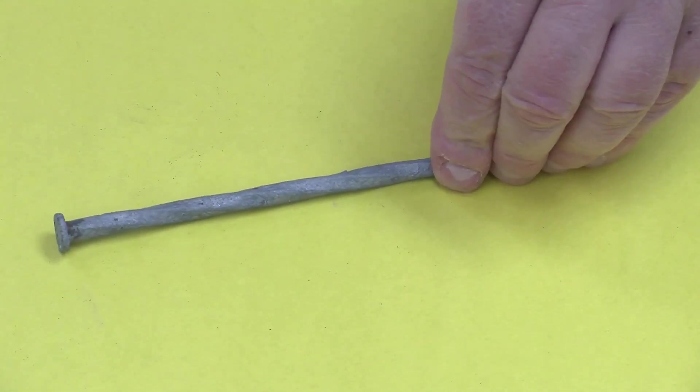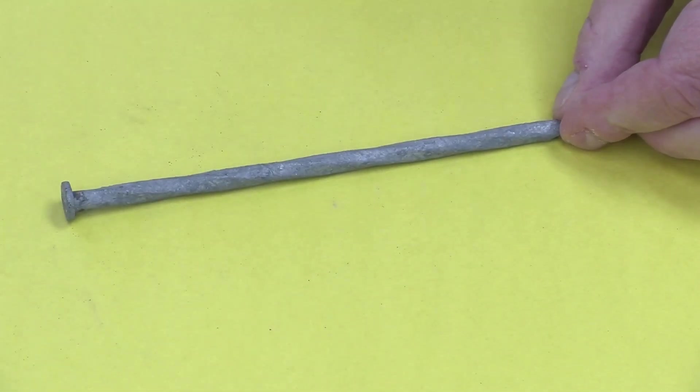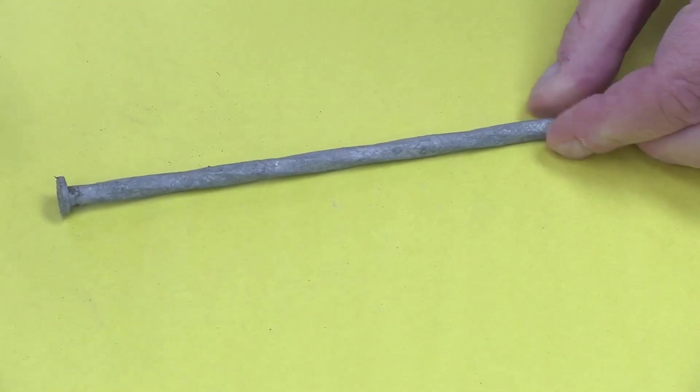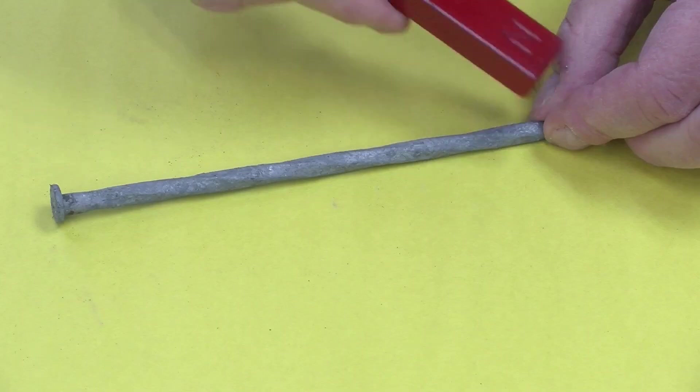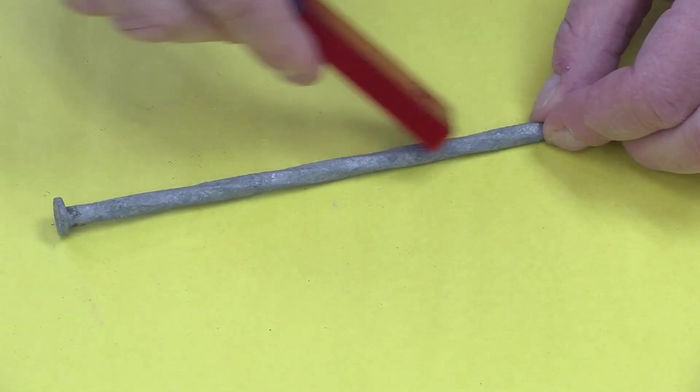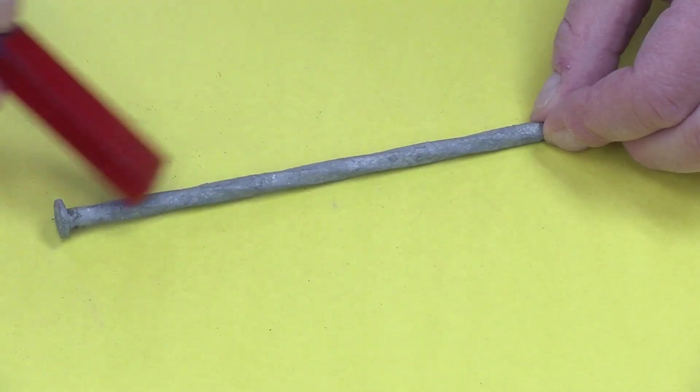So, how do we magnetize something? Well, when you were in grade school, you probably did this. You took a nice big nail and you took a magnet and you moved it along the nail like that a whole bunch of times. And, if you were lucky, you got a weak magnet.